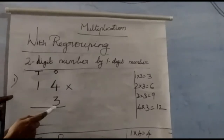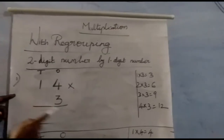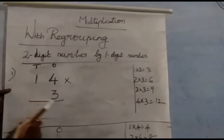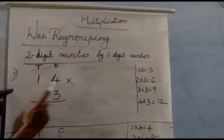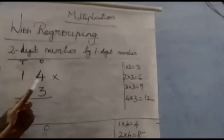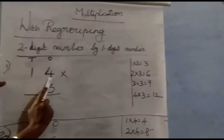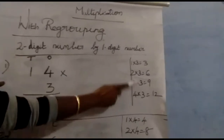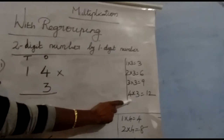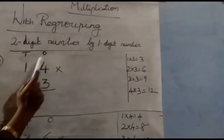Here we have a two-digit number and a one-digit number. Which table are we going to use? The three times table. Among these two numbers, four is the greater number, so write the three times table up to four.